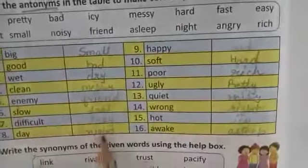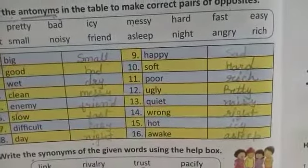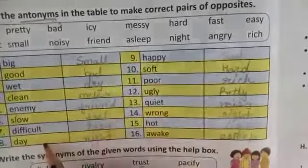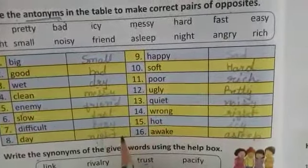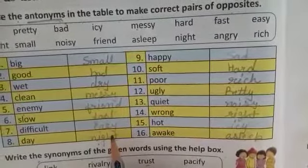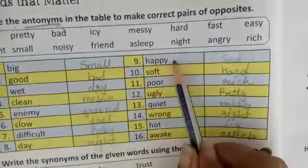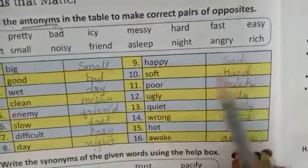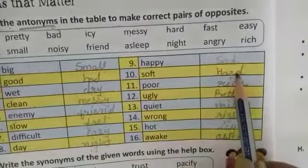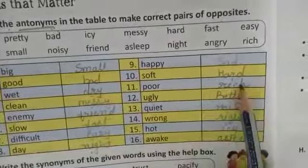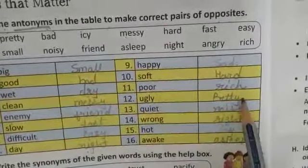I am not going to explain these because you already know all the word meanings and their opposites. If you have any problem you can ask me. Now the next ones: happy, sad. Soft, hard. Work, rich. Ugly, pretty.